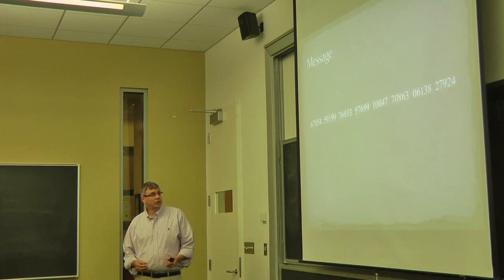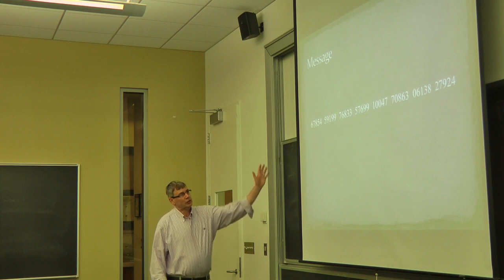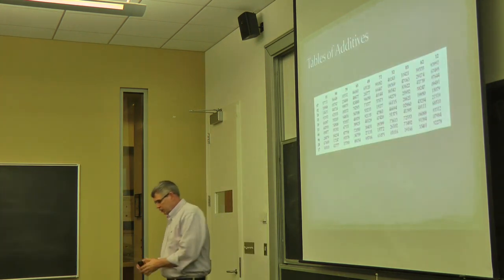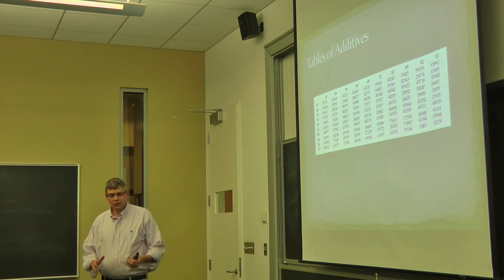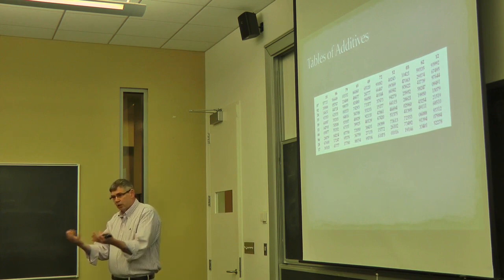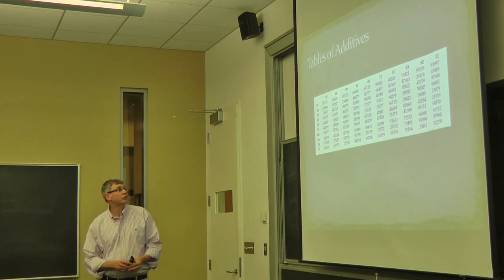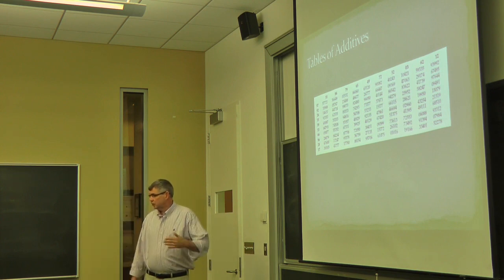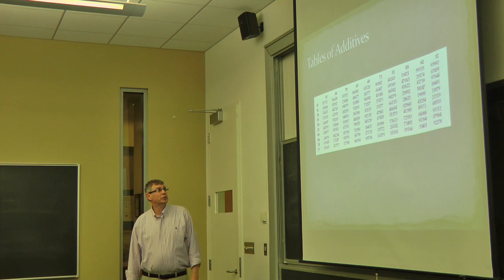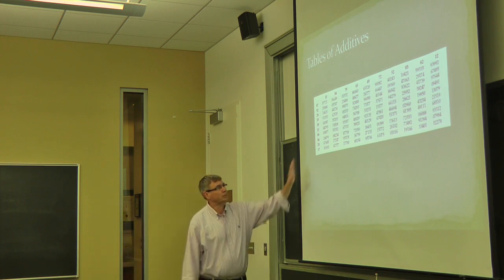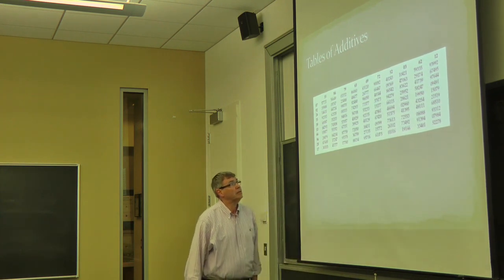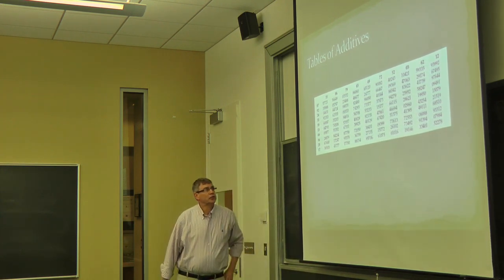So this is the beginning of a JN25 message. These are all valid code groups. What the receiving operator or the sending operator had to do was he had the code book in which he took out words and phrases and substitutions for them. But there was another book that was a table of random numbers, and there were pages and pages of these random numbers. He selected a starting point. I'm going to select the starting point over here, 51375.